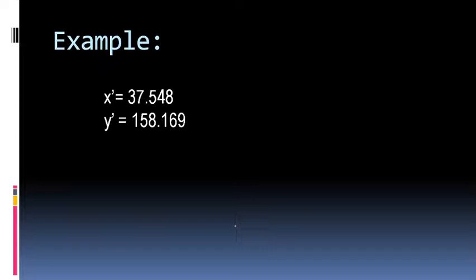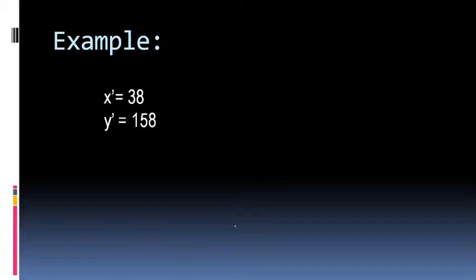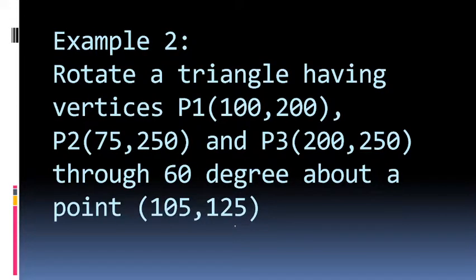These fractional values are not valid for drawing directly on a monitor, so they can be rounded off to integer values. These rounded values are then the coordinates of the new location of the point rotated through theta degrees about the pivot point.